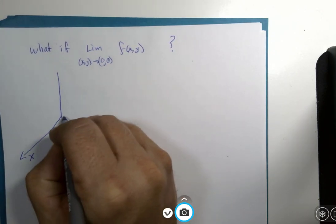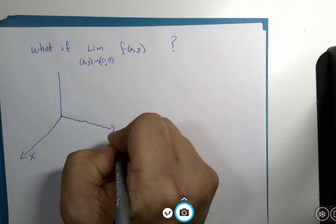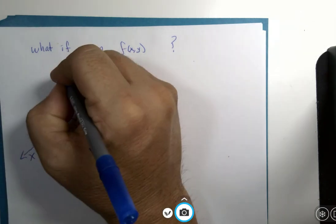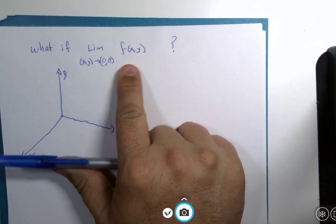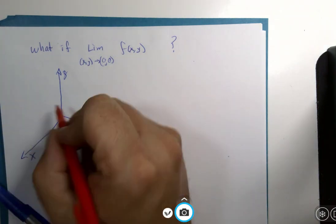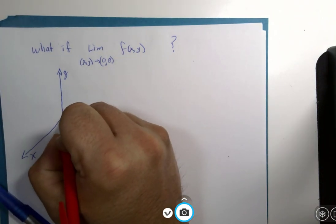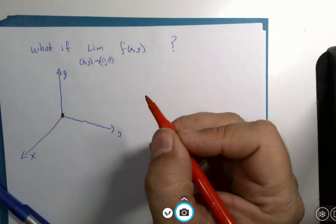we could try to imagine what this looks like: x, y, z. Remember, this is z. The function is z. So we're saying, well, what if we approach where x and y are both zero? Now,